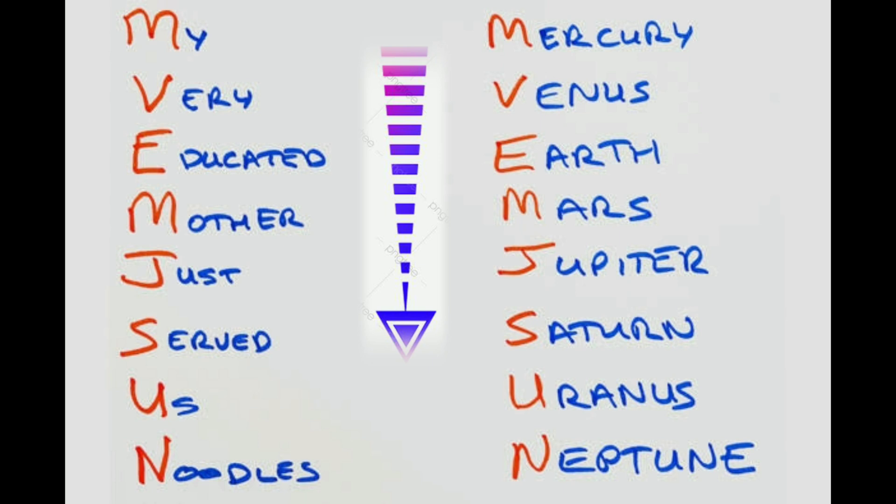Here, M stands for Mercury, V stands for Venus, E stands for Earth, M stands for Mars, J for Jupiter, S for Saturn, U for Uranus, and N for Neptune. You just have to memorize this sentence.